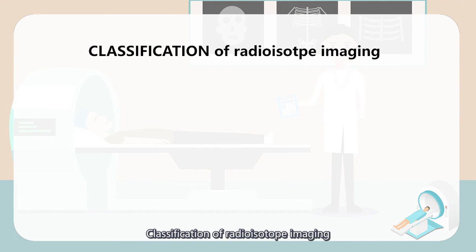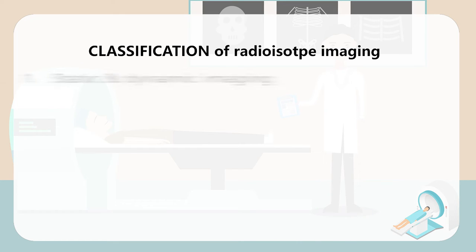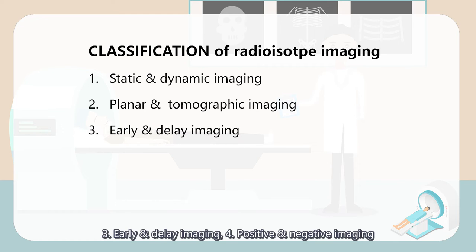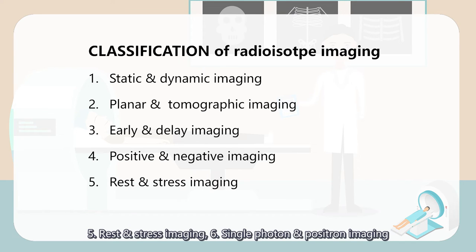Classification of radioisotope imaging: first, static and dynamic imaging. Second, planar or tomographic imaging. Third, early and delay imaging. Fourth, positive and negative imaging. Fifth, rest and stress imaging. The last one, single photon imaging and positron imaging.